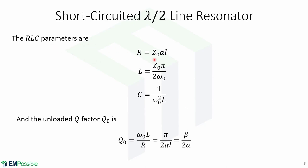The resistance R equals z0 times alpha-L. The inductance L equals z0 times pi over 2*omega-0. Capacitance C equals 2 over omega-0 squared times inductance L. The unloaded Q factor Q0 is given by omega-0 times L over R, which equals pi over 2*alpha-L, which is also equal to beta over 2*alpha.